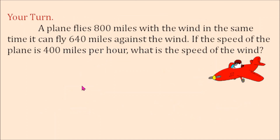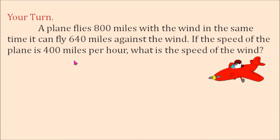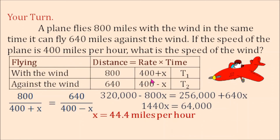Now your turn: a plane flies 800 miles with the wind in the same time it can fly 640 miles against the wind. If the speed of the plane is 400 miles per hour, what is the speed of the wind? You can pause the video and take your time working on this problem. The answer is 44.4 miles per hour — that is the speed of the wind. Did you get it right? I hope you did.